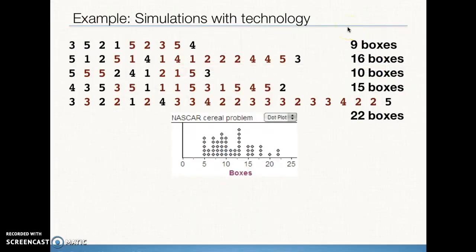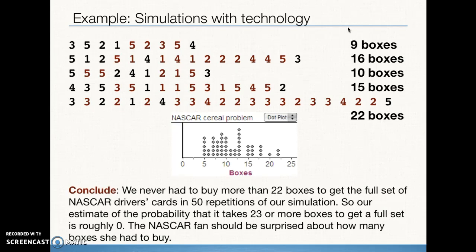And after we run 50 different simulations, we're able to graph all of the outcomes on this dot plot. What we see is we never, out of our 50 trials, got one where we had to buy 23 boxes in order to get all five. So what this means is we are very unhappy with the cereal company because in our simulation where we assumed that their claim was true, it never happened in 50 trials. That means the probability from our simulation resulted in a probability of zero of having to buy 23 boxes to get the five cards.